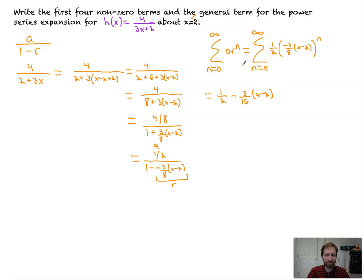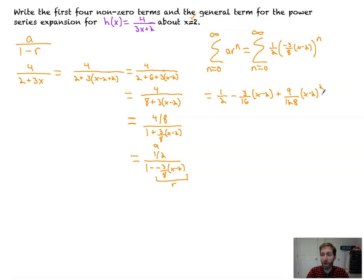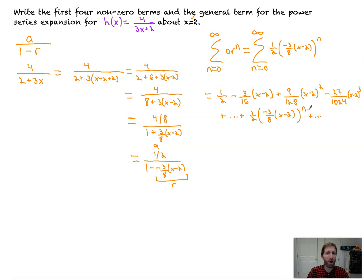Writing the first four non-zero terms: first term (n=0) is 1/2. Next term: negative 3/8 times 1/2 is negative 3/16 times (x minus 2). For n=2, multiplying by negative 3/8 again: positive 9/128 times (x minus 2) squared. For n=3: minus 27/1024 times (x minus 2) cubed. Plus dot dot dot plus the nth term. Yes, this is gross. Do I ask my students to do this? Yes. Have I ever seen this on the BC exam? Heck no. But I want to prepare you for everything.